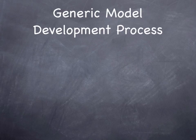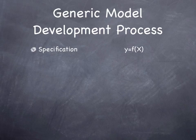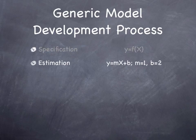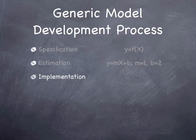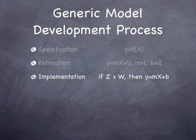There's a generic model development process. The first thing we need to do is specify the model: Y is a function of X, where Y is our outcome and X is our set of inputs. Then we need to estimate the model — for instance, y = mx + b. We need to know what m and b are; these are things we can estimate with statistical methods. Then we need to implement the model in software. For instance: if z is greater than w, then y = mx + b; otherwise, something else.